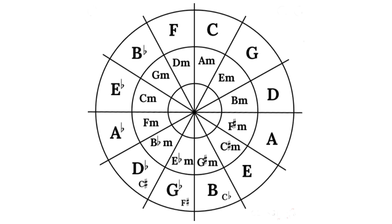If we travel anti-clockwise from C, F has one flat, B flat has two flats, E flat has three flats etc.